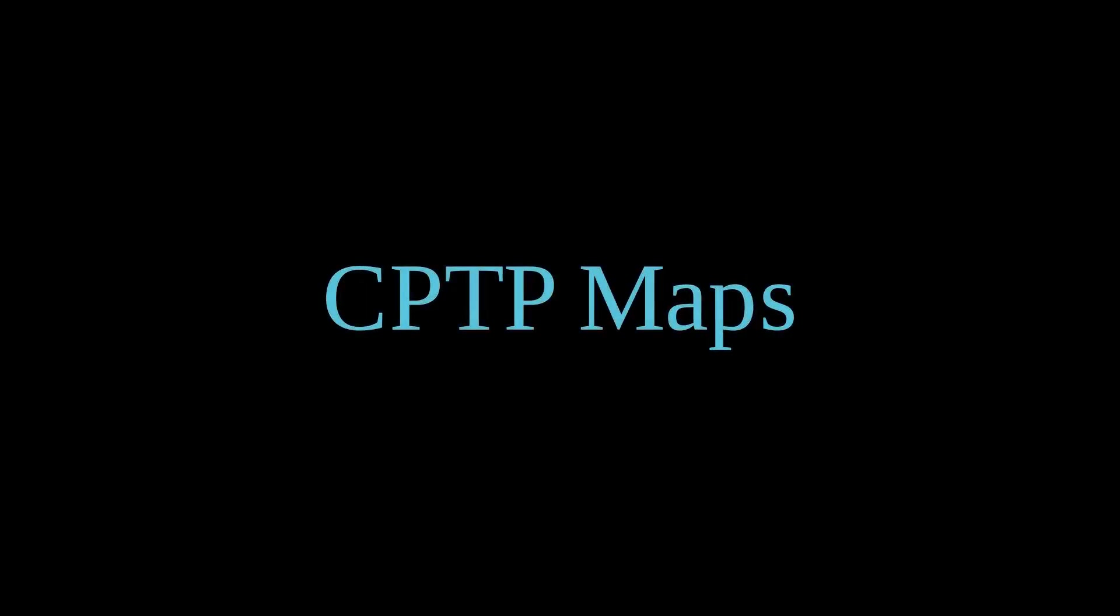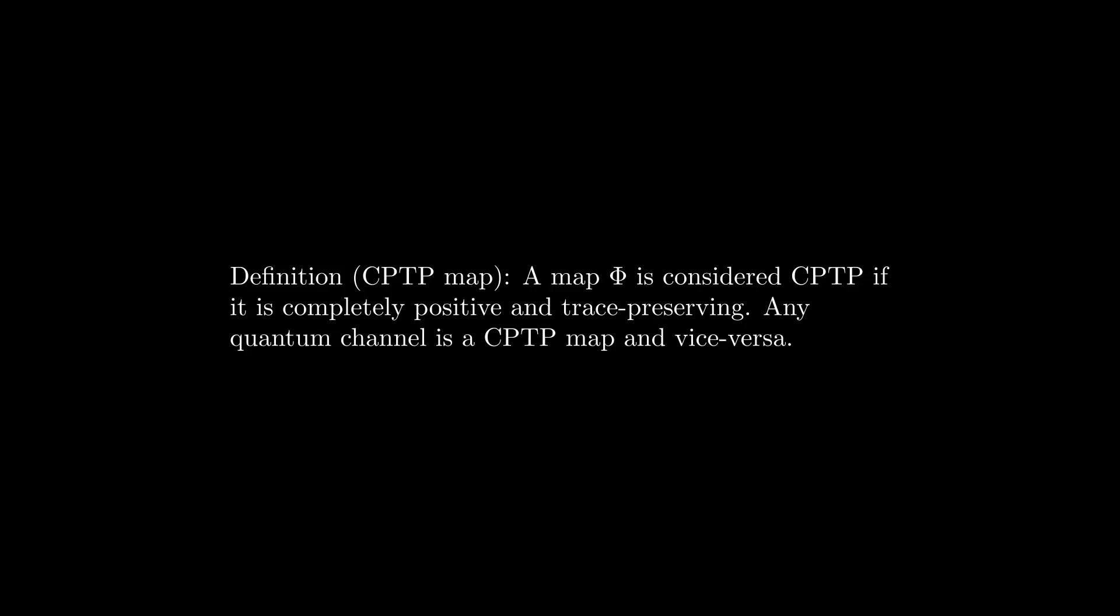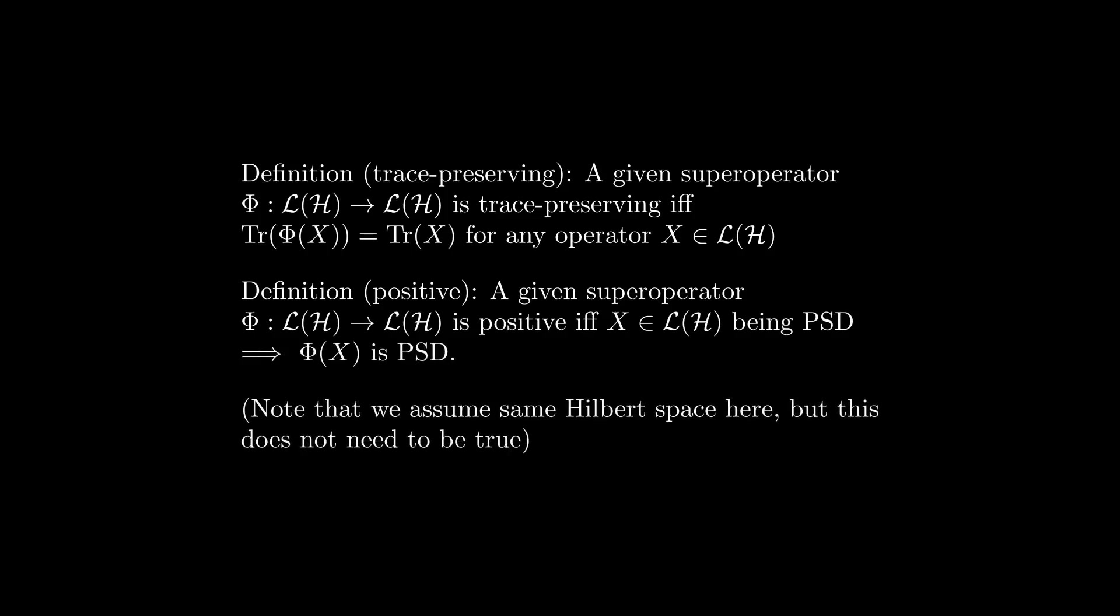Let's now consider the third formalism for quantum channels, CPTP maps. Abstractly, we have that a quantum channel is a CPTP map and vice versa. A linear map is CPTP if and only if it is completely positive and trace-preserving. Intuitively, we have that trace-preserving means that the trace of the operator, the superoperator acts on, is preserved. Positive simply means that PSD matrices are mapped to other PSD matrices. Note that here, I am assuming that the map is between the same Hilbert spaces, since we are only considering how a given state changes under the channel. But this doesn't necessarily have to be true in general, so it's important to keep that in mind. Since quantum channels map density matrices to other density matrices, which are always PSD and of trace 1, these two properties make sense.